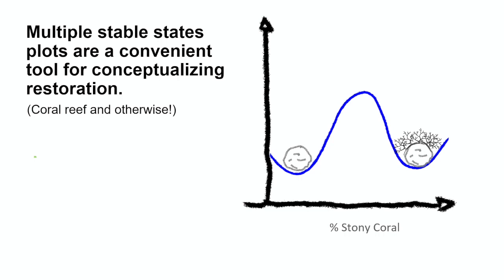The next most simple thing is: okay, there's not just one equilibrium, but there's two. This is the origin of alternative stable states, or multiple stable states, thinking. It's been used as a conceptual tool for thinking about restoration — the reef could exist in a healthy state or in a degraded state: two alternative stable states.